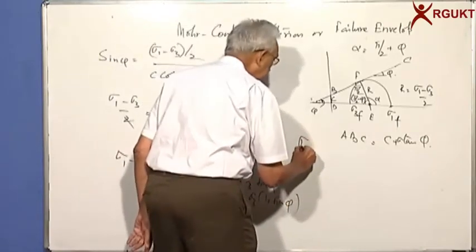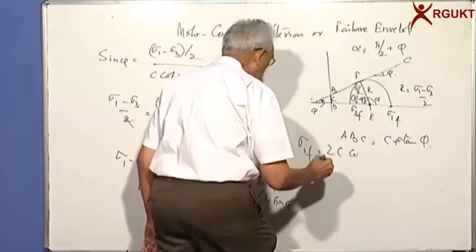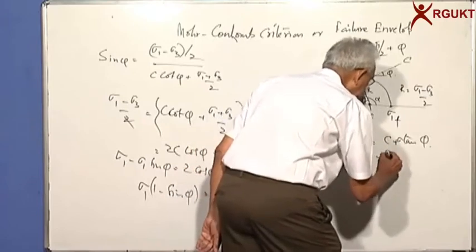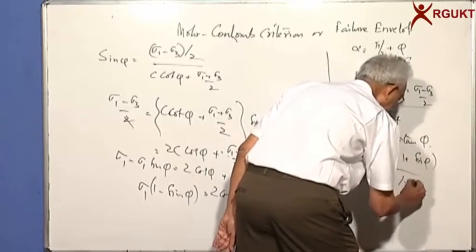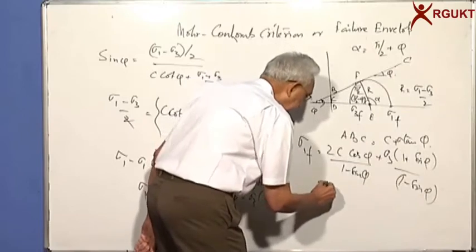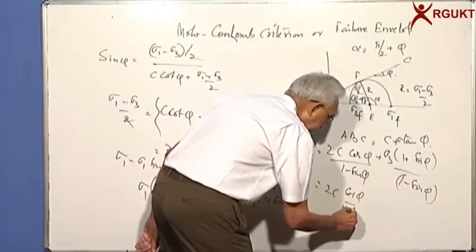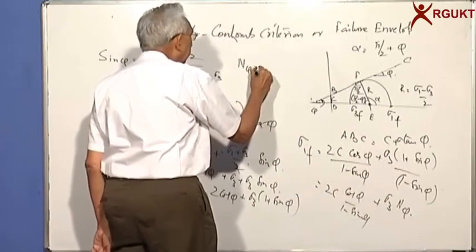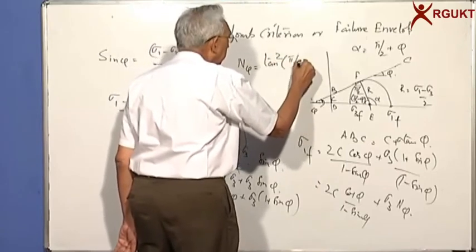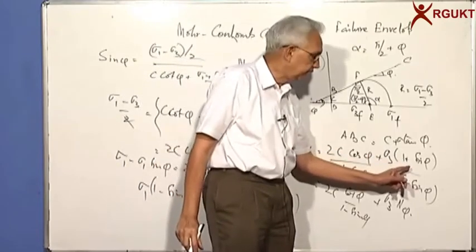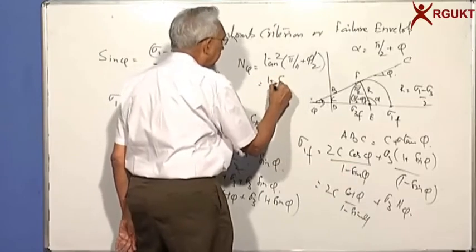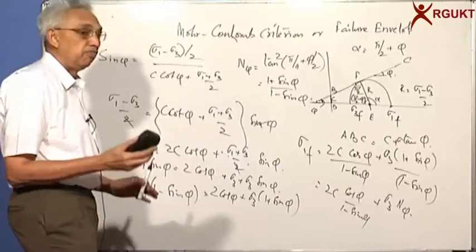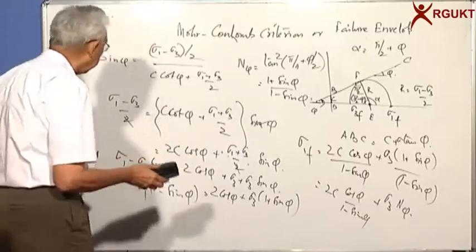At failure, sigma 1f equals [2C cos(phi) / (1 minus sin(phi))] plus sigma 3 times [(1 plus sin(phi)) / (1 minus sin(phi))]. We can write this as 2C cos(phi)/(1 minus sin(phi)) plus sigma 3 times N_phi, where N_phi equals tan²(pi/4 plus phi/2), which equals (1 plus sin(phi))/(1 minus sin(phi)). This gives a very simple expression for failure in terms of principal stresses — that is the beauty of the Mohr circle.